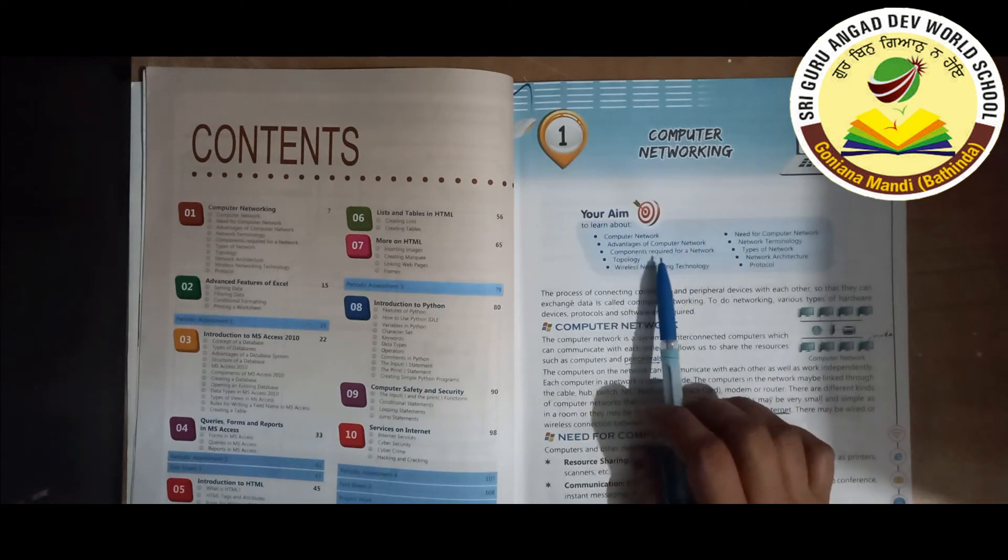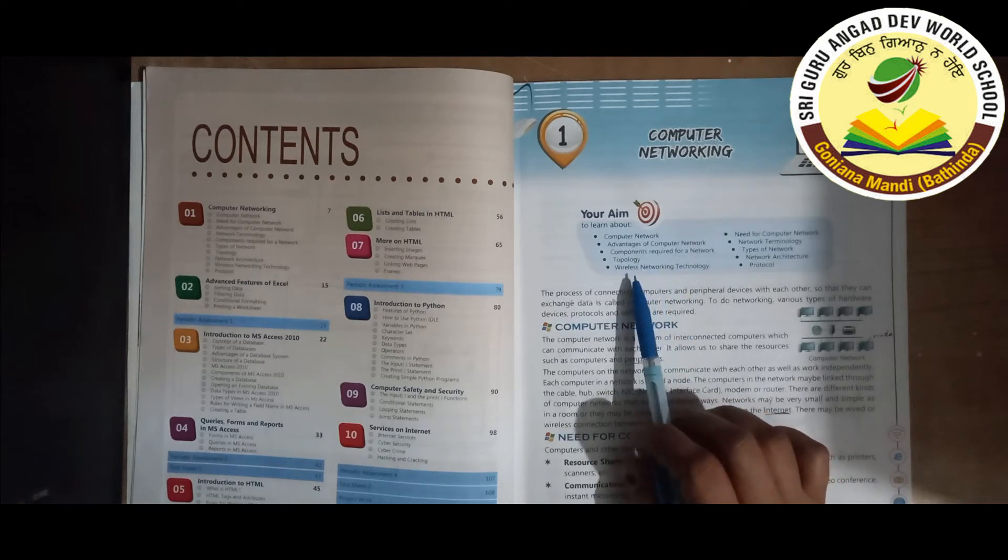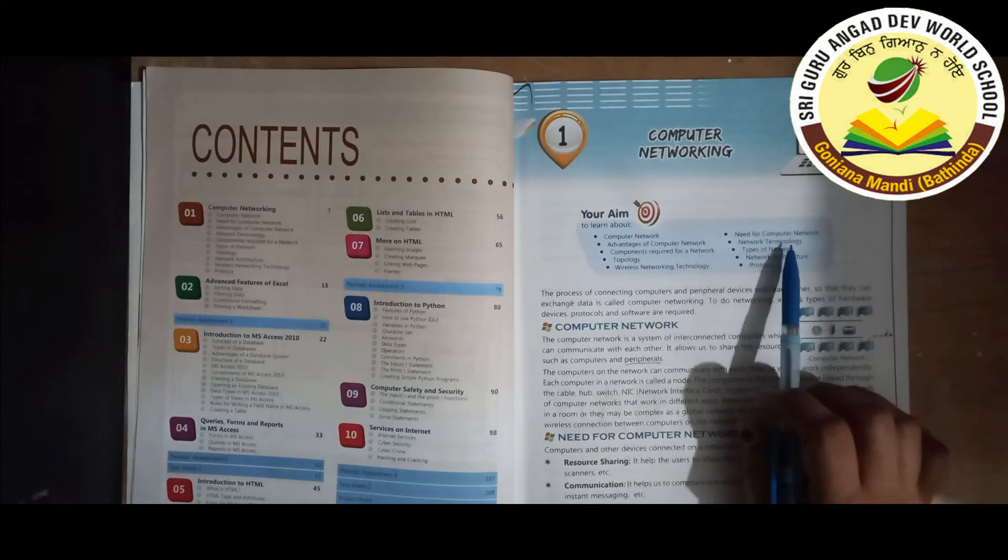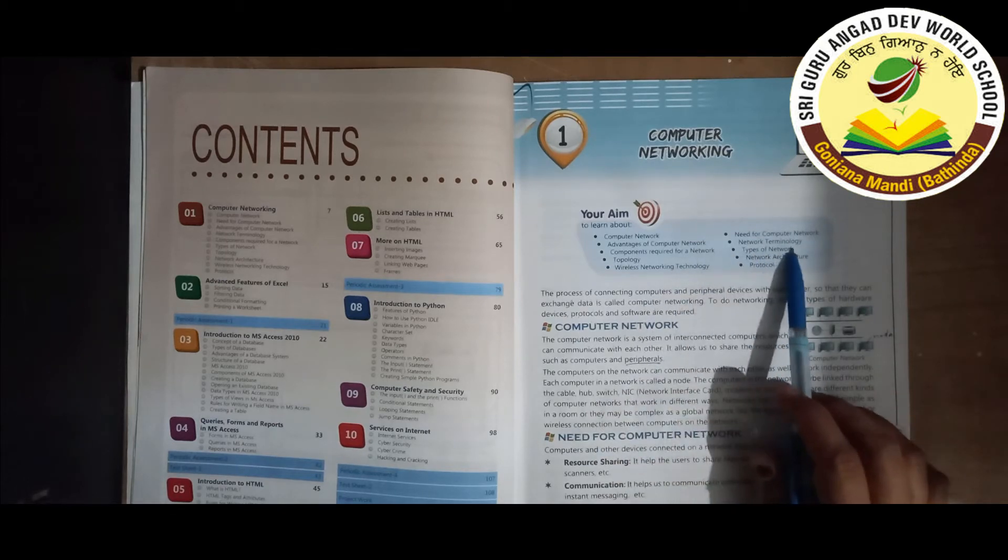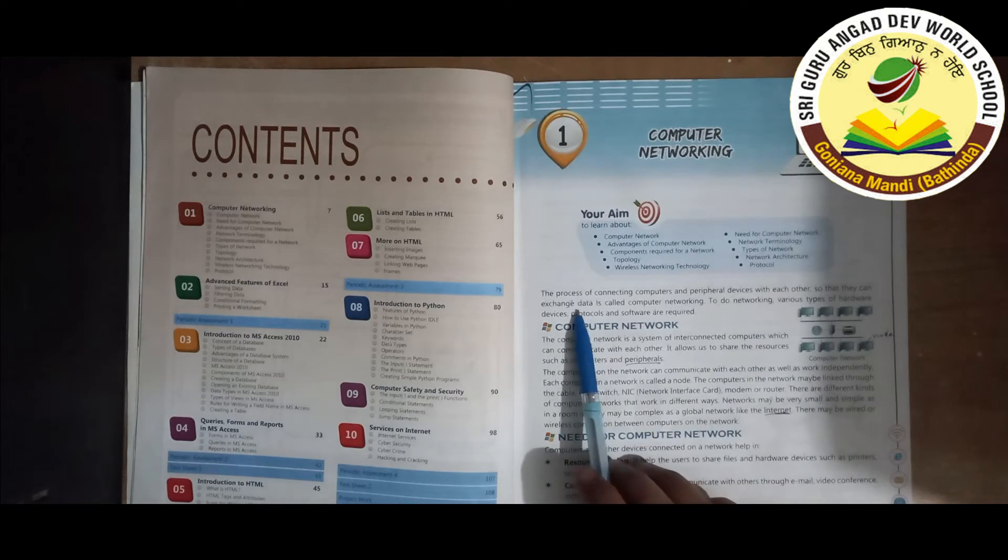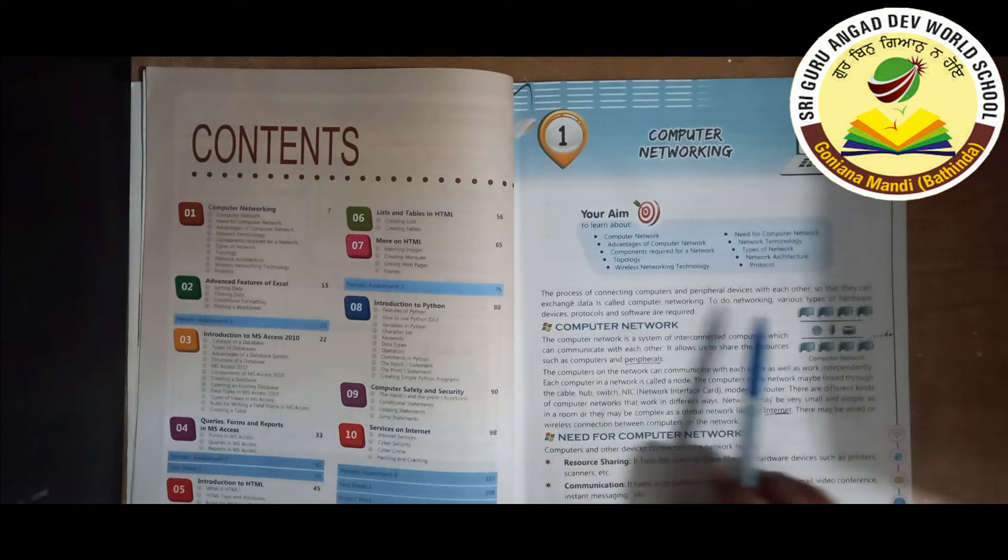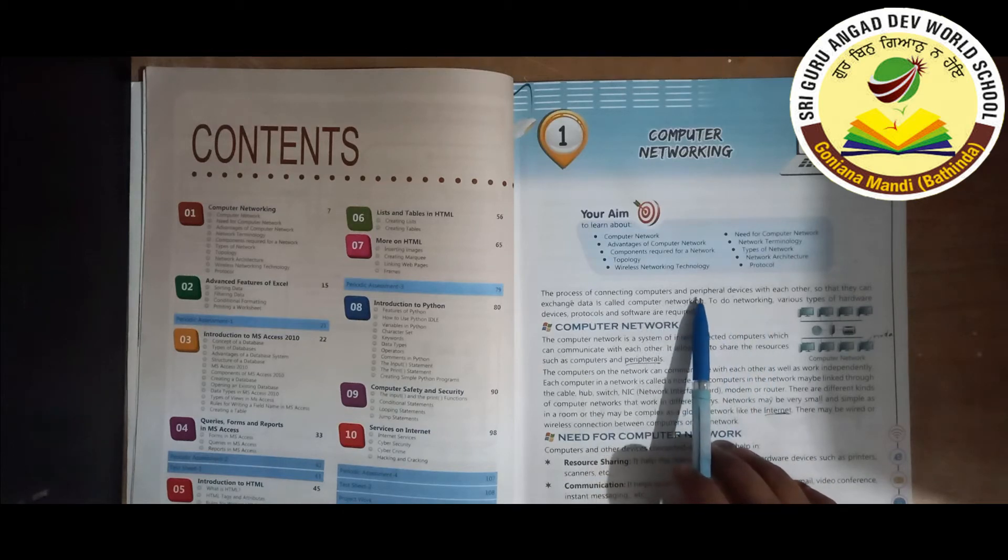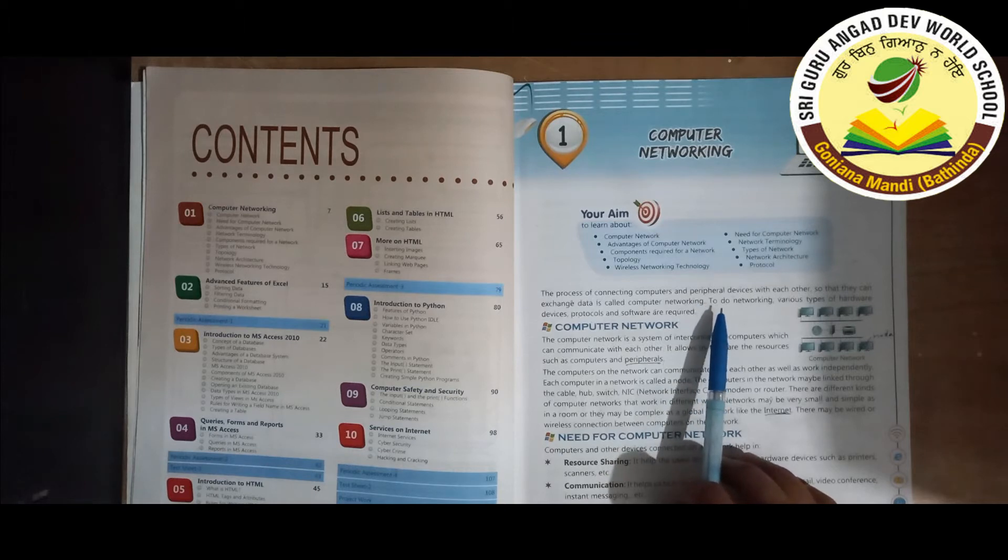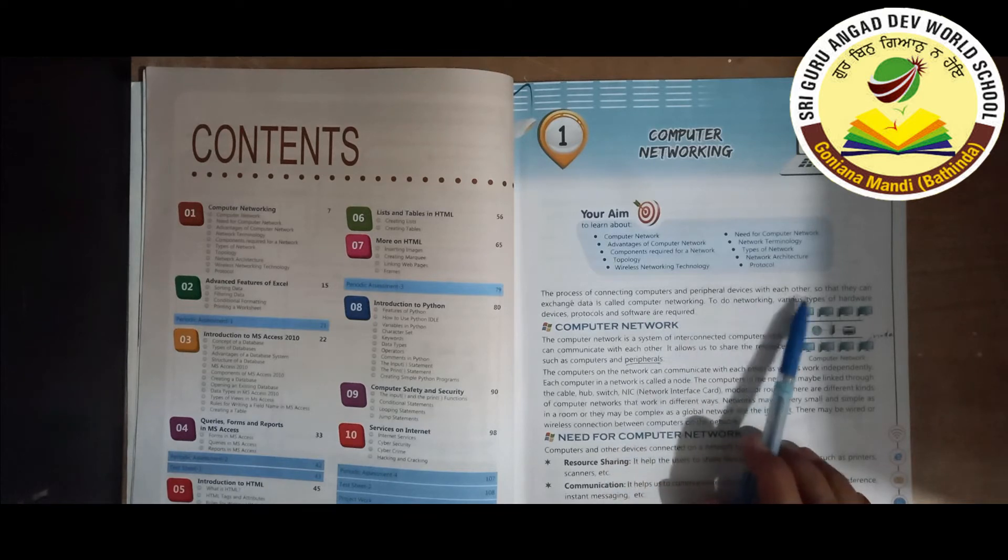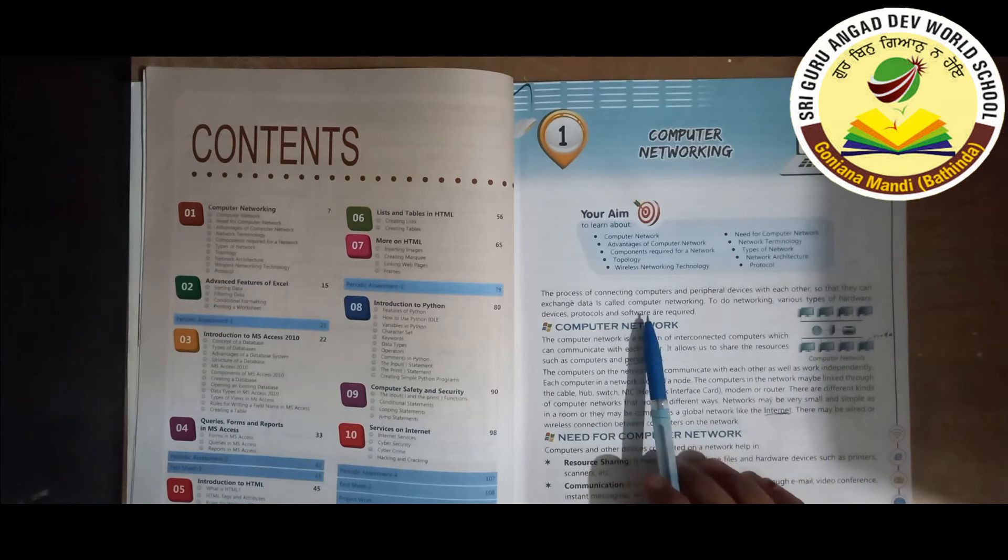Which are required for a network topology. Topology means which policy is used in computer networking. Wireless networking technology, need for computer network, network terminology, types of network, network architecture, protocol, and the process of connecting computers and peripheral devices with each other.